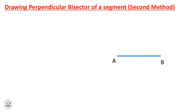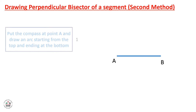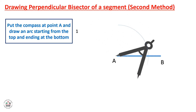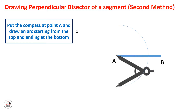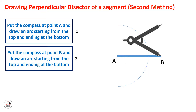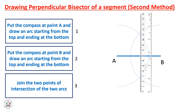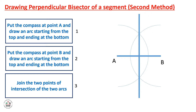Now we will learn how to draw a perpendicular bisector of a segment using a compass, which is the second method. Place the compass at point A and draw an arc from top to bottom. Keep the compass at the same opening distance, place it at point B, and draw another arc. Then join the two intersection points of the two arcs using a ruler to get the perpendicular bisector. Note that the compass opening must be greater than half the length of segment AB, otherwise the arcs will not intersect.